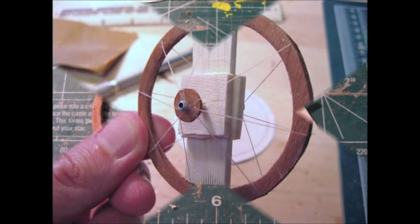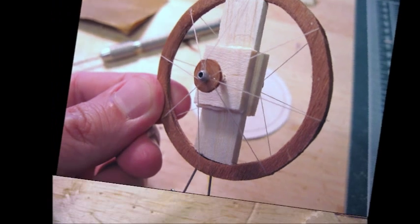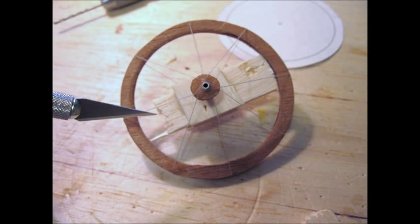Once you have eight thread spokes in and glued in place, you have enough space with a sharp knife to carefully cut out the jig that is holding the axle in place. The eight thread spokes is enough to hold the axle in place.